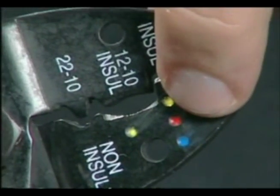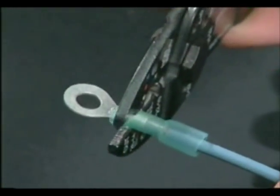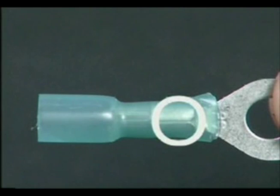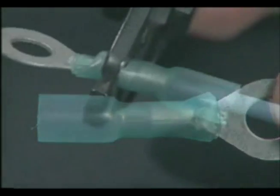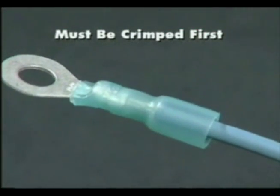Use the proper crimp die and crimp the terminal. Be sure to crimp the terminal barrel and not the solder sleeve. The terminal must be crimped before heating and soldering.